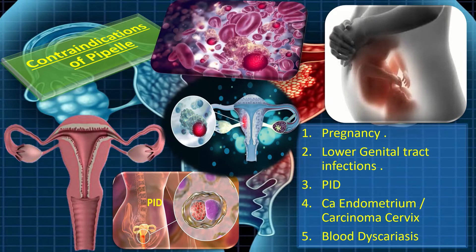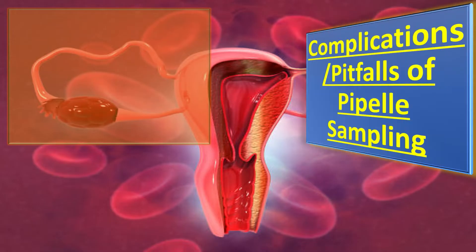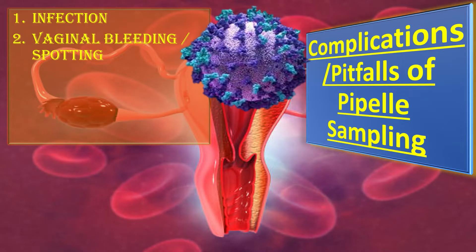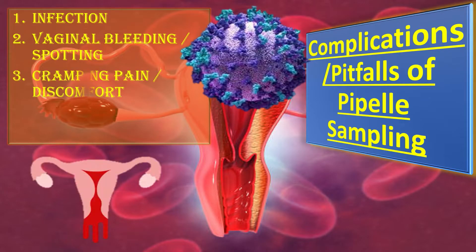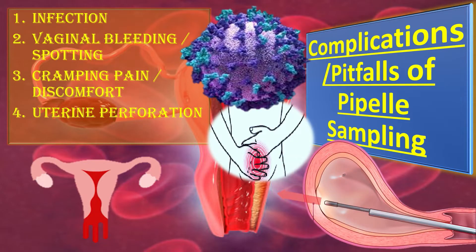The complications and pitfalls of pipel sampling include infection, vaginal bleeding or spotting, cramping pain or discomfort, uterine perforation, and uterine spasm.